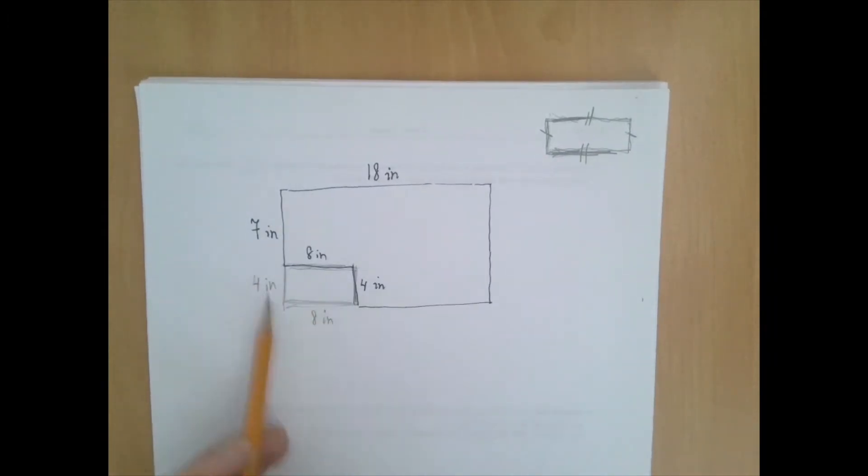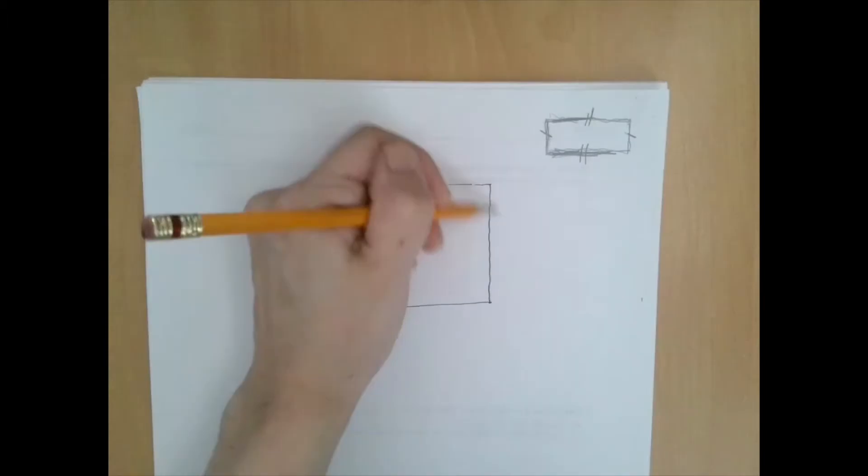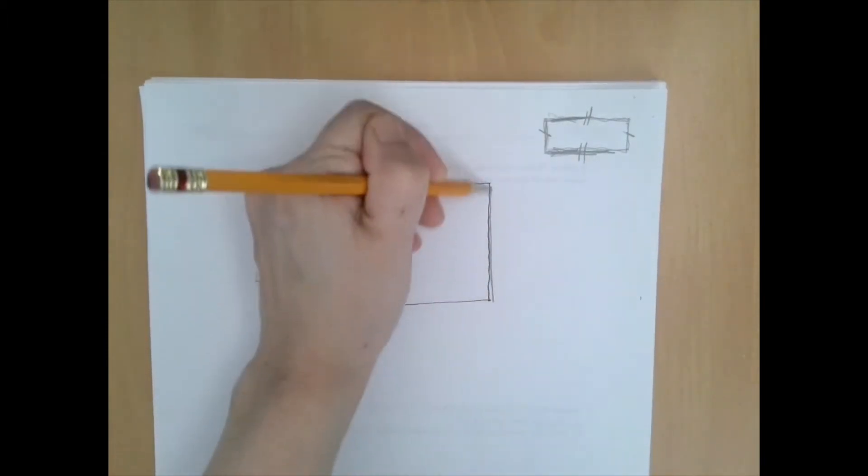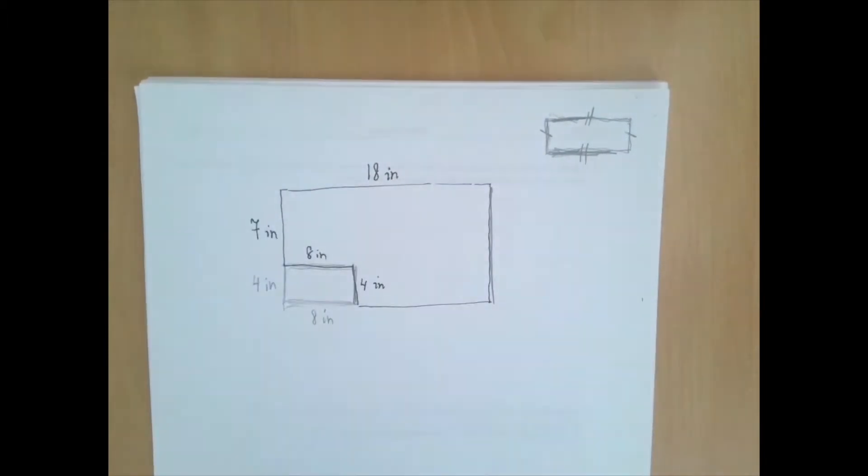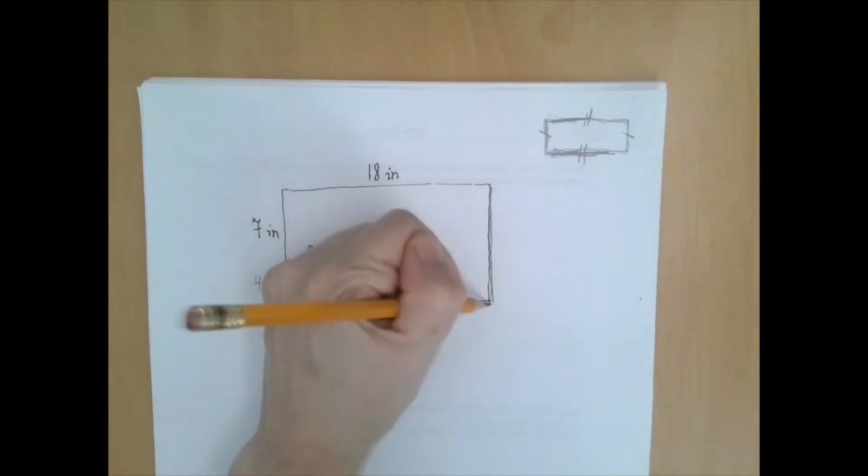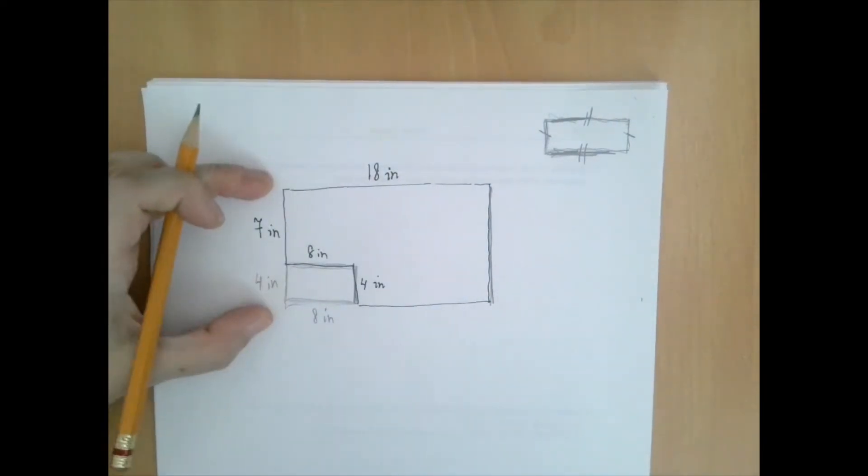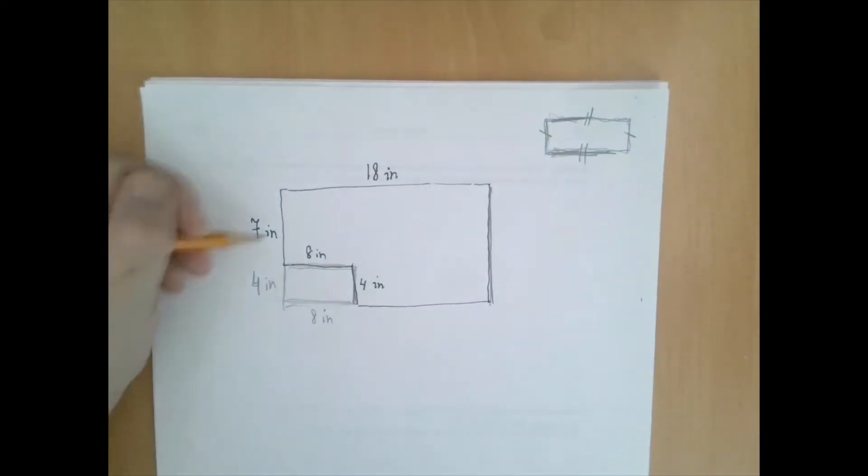Even though this is not part of the shape, it's greatly helpful because it tells us how long this side is. Well, because we're talking about rectangles, this side is the same length as this. And we just figured out that that side must be 11 inches long, because it's 7 and 4 put together.